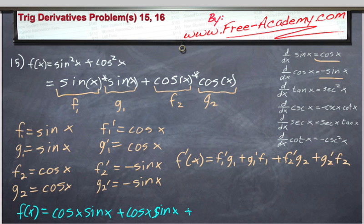This is going to be plus f2 prime, which is negative sine of x, plus g2, which is cosine of x, plus g2 prime, which is minus sine of x, times f2, which is cosine of x.